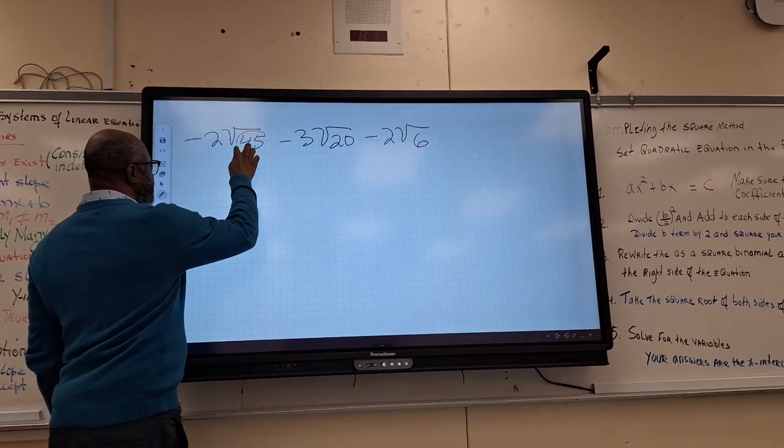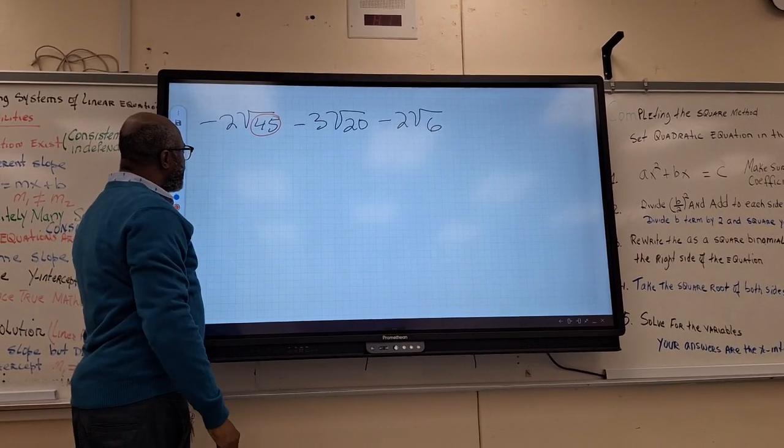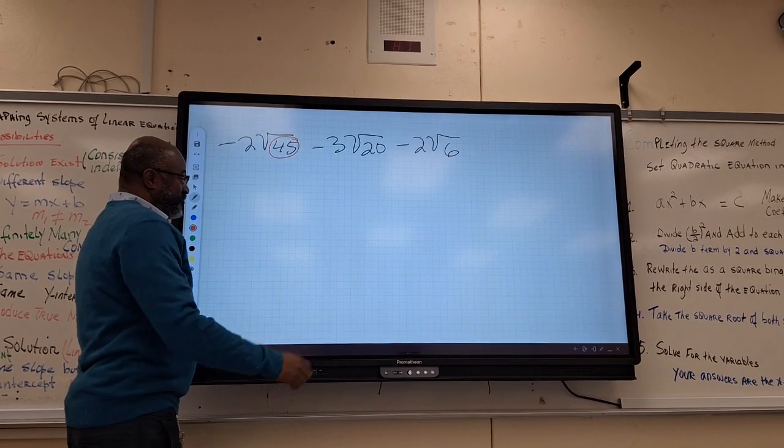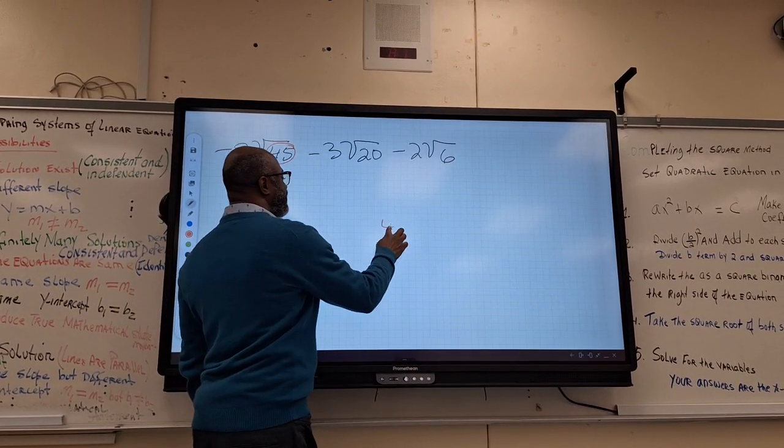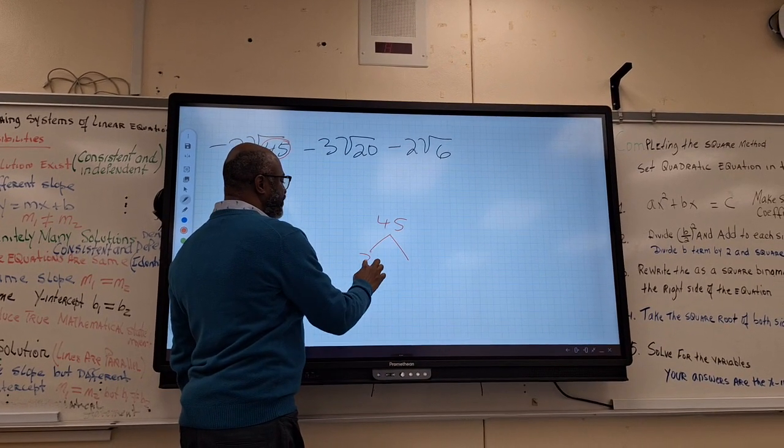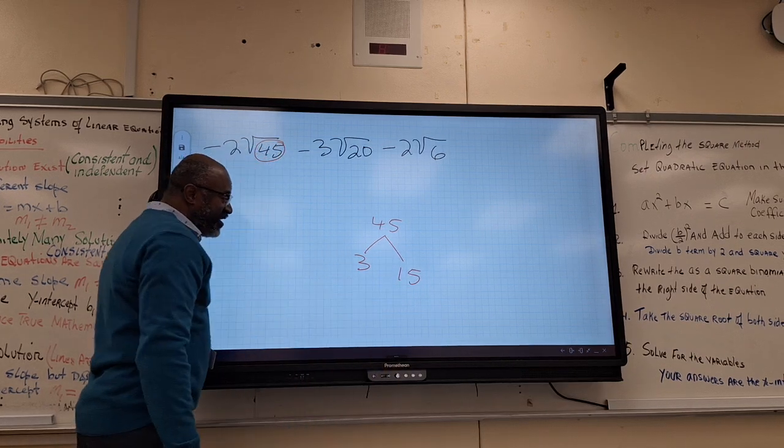Some issues here. This can be broken down as well. If you don't know, 45. What is it? 15 times 3. There's no best way. What about 15?